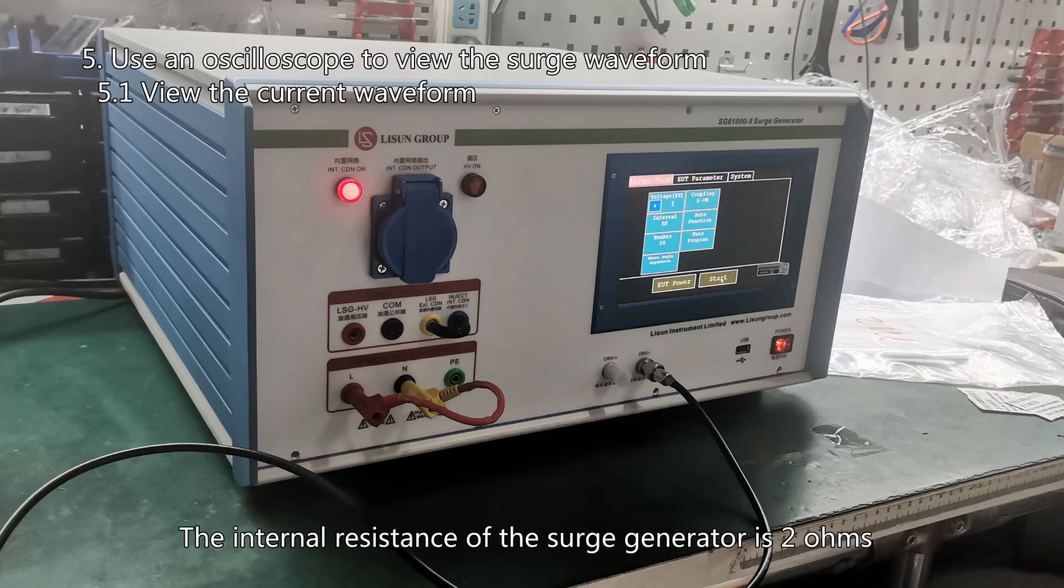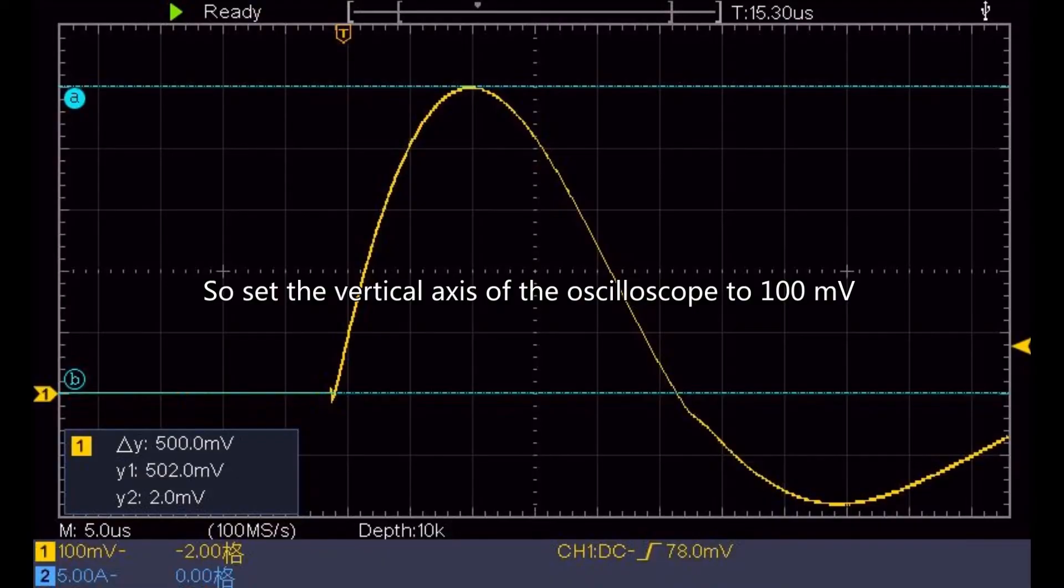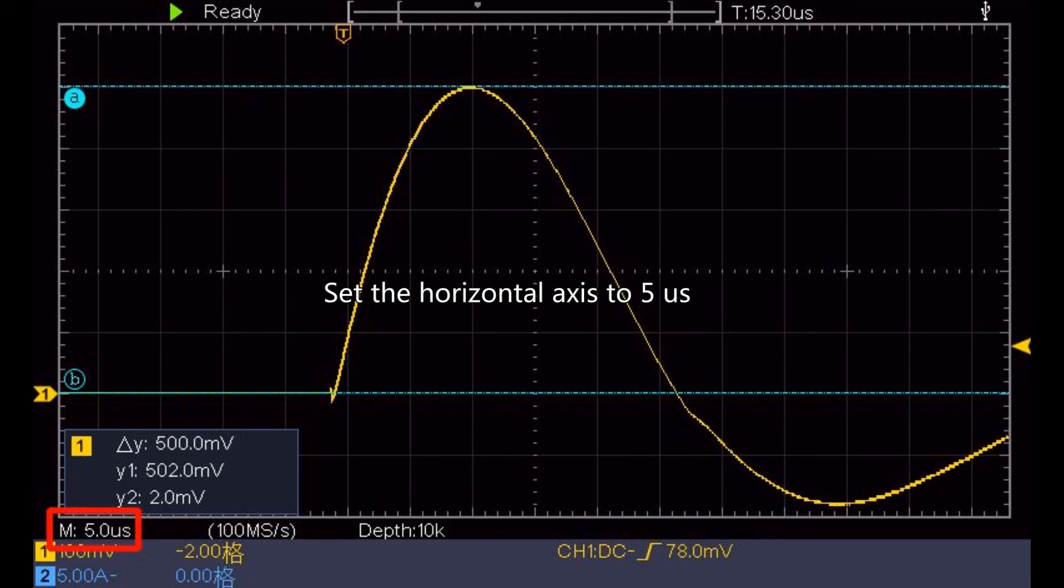The internal resistance of the surge generator is 2 ohms. So set the vertical axis of the oscilloscope to 100 millivolts. Set the horizontal axis to 5 microseconds. Other parameter settings are the same as when viewing the voltage waveform.